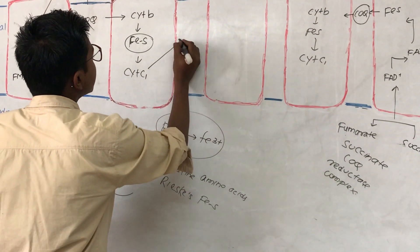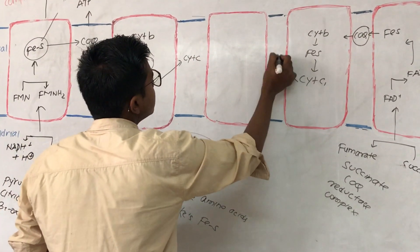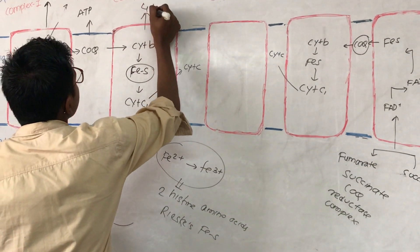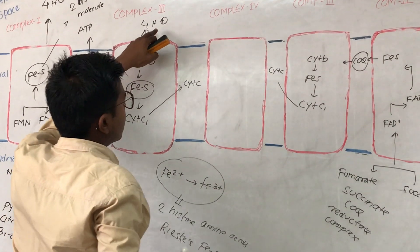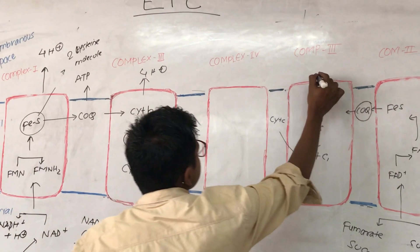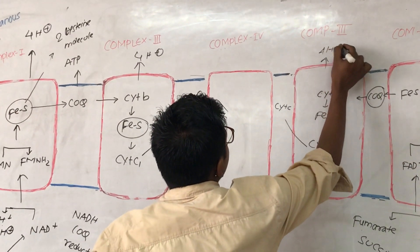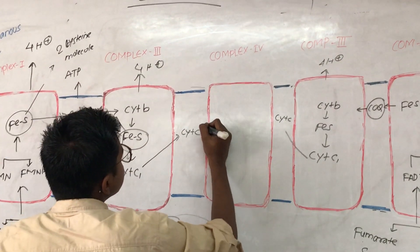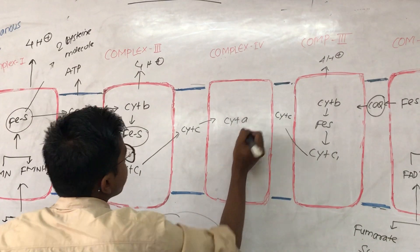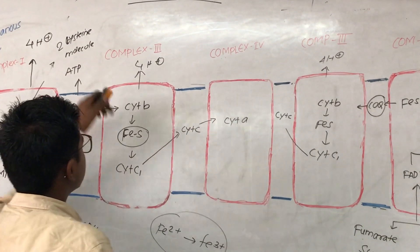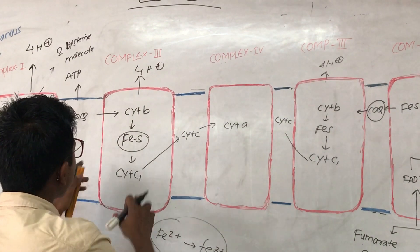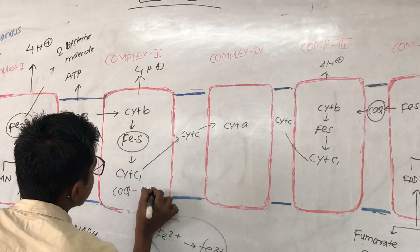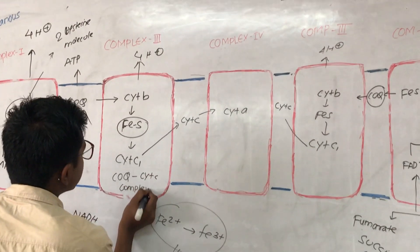The Rieske Fe-S complex donates its electron to cytochrome c1, which then donates its electron to cytochrome c. This is also associated with the pumping of four protons to the outside. Cytochrome c is a mobile complex, and it donates its electron to cytochrome a. This complex is also known as the coenzyme Q cytochrome c complex, because electrons are transferred from coenzyme Q to cytochrome c.